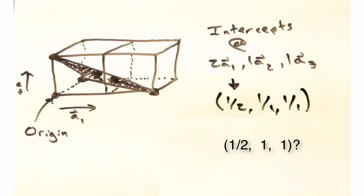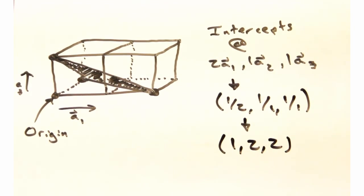We want everything to be an integer. Thus, we'll scale everything to the smallest integer and label this plane as the 1-2-2 plane.